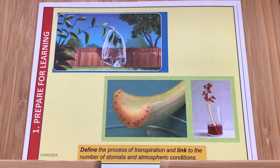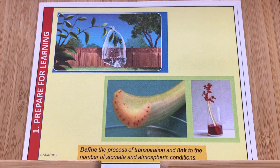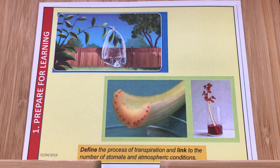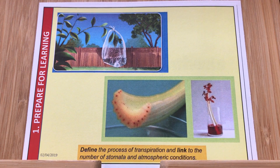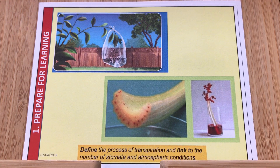We can evidence that by looking at some celery. This celery has been placed in red food dye and you can see the xylem — those stringy bits of the celery contain the xylem and the phloem — and we can see the red dye travel through it.